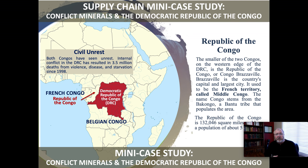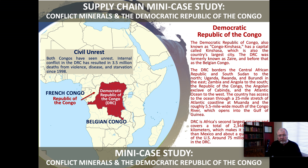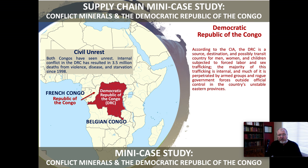The Republic of the Congo is the smaller of the two Congos and has its own problems, but we will focus on the Democratic Republic of the Congo. It's Africa's second largest country by area, and incredibly rich in minerals. According to the CIA, the Democratic Republic of the Congo is a source, a destination, and possibly a transit country for men, women, and children subjected to forced labor and sex trafficking. The majority of this trafficking is internal — Congolese enslaving Congolese — and much of it is perpetrated by armed groups and rogue government forces outside of official control of the country's unstable eastern provinces.